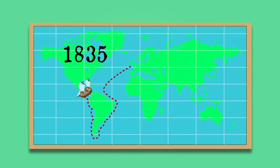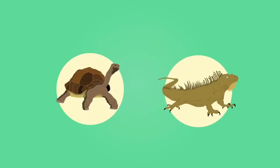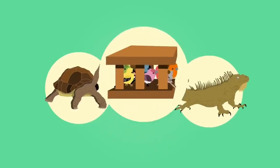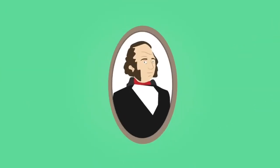What Darwin found there surprised him greatly. As well as giant tortoises and marine iguanas, Darwin collected and preserved a variety of different songbirds called finches. Upon returning to the UK, he examined them together with ornithologist John Gould and made some fascinating discoveries.